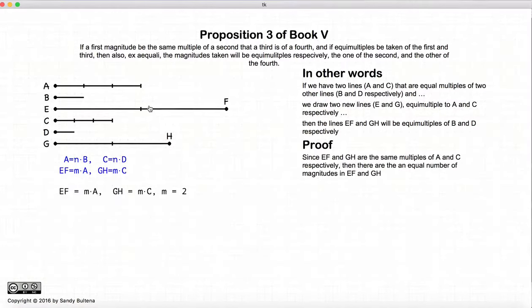Now EF is equal to MA and GH is equal to MC. So EF and GH are equal multiples to A and C. Let's define two points, K and L, such that EK is equal to A, KF is equal to A, GL is equal to C, and LH is equal to C.